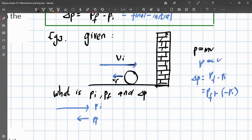So this can also be rewritten, or to make it easier, as the final momentum plus negative of initial momentum. So this is the way I want you to remember the formula for this. pf, the final momentum, plus the negative of the initial momentum.